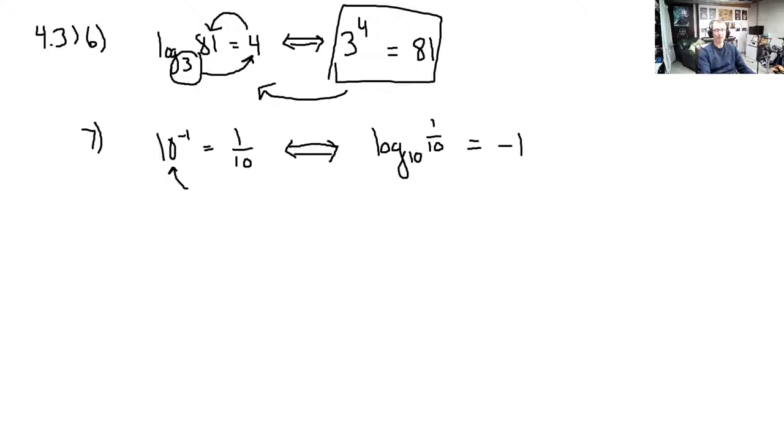Okay, if we think about this in the other direction, 10 to the negative first equals 1 tenth. Right, I like to draw that sort of circle there. Start at the base, go over to the result, come back to the argument. That gives you the exponential form. And that's exactly what we've got over here on the left for the exponential form. Okay, and that's it.